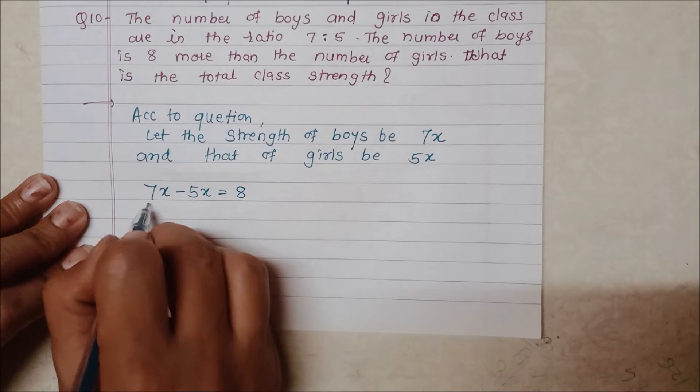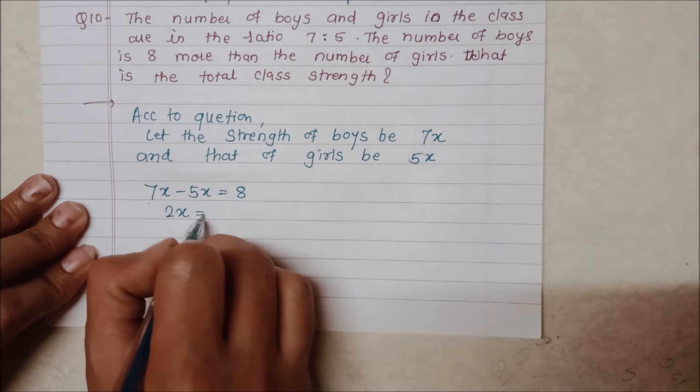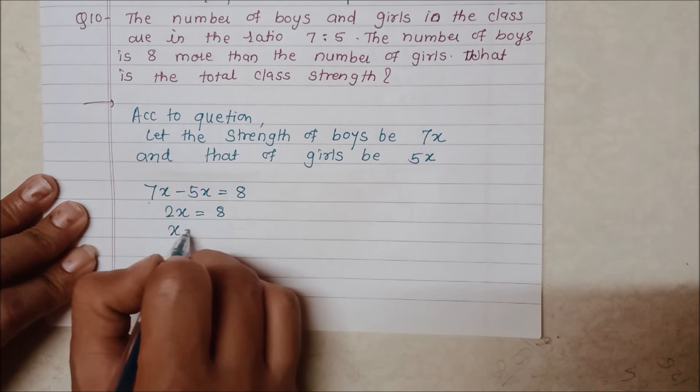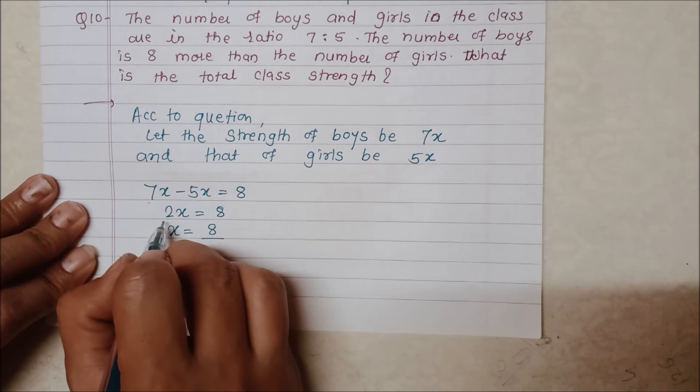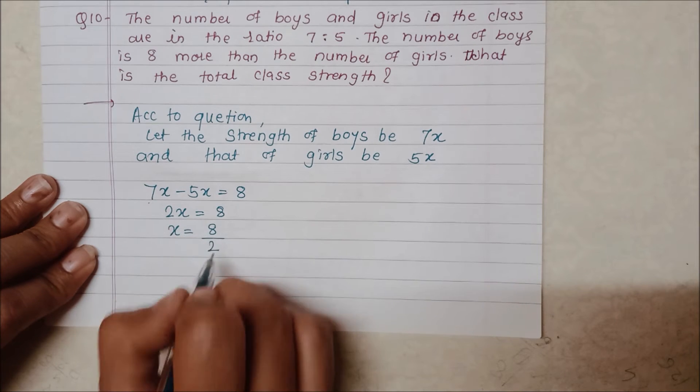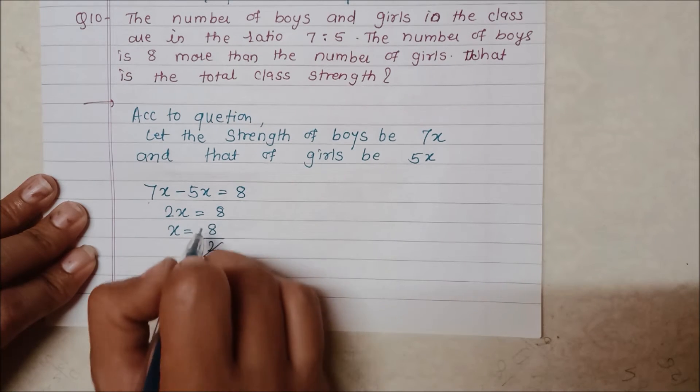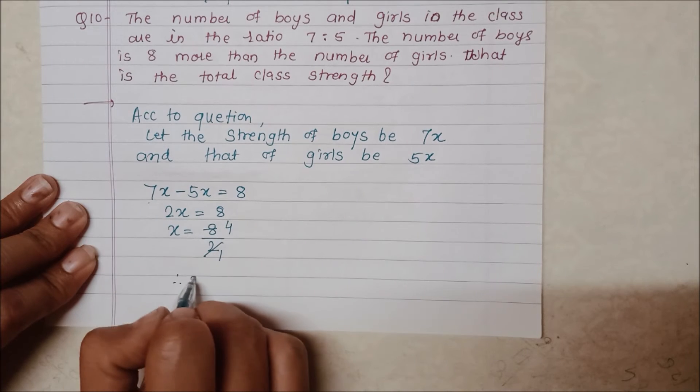7x minus 5x is equal to 8. 2x is equal to 8. Here we have x multiplied, so we divide. 8 divided by 2, 2 into 4 is 8. Therefore, x is equal to 4.